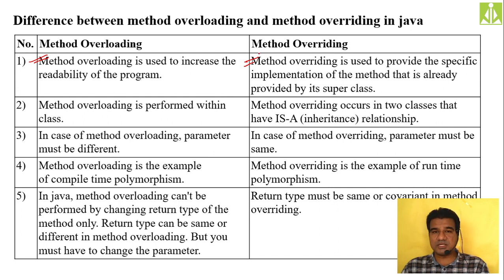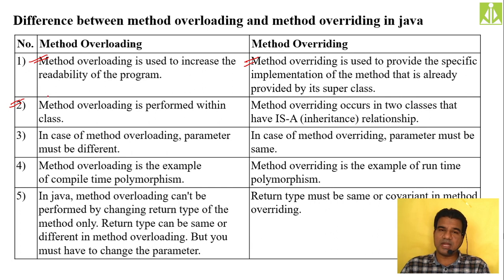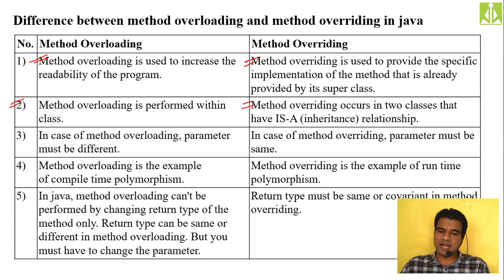Inside the subclass we provide the specific implementation for a particular method whose implementation was already given by the parent class. Method overloading is performed within the same class — there is no multi-class concept, no IS-A relationship, no inheritance concept in method overloading. You can take the same method names but with different parameters within the same class.